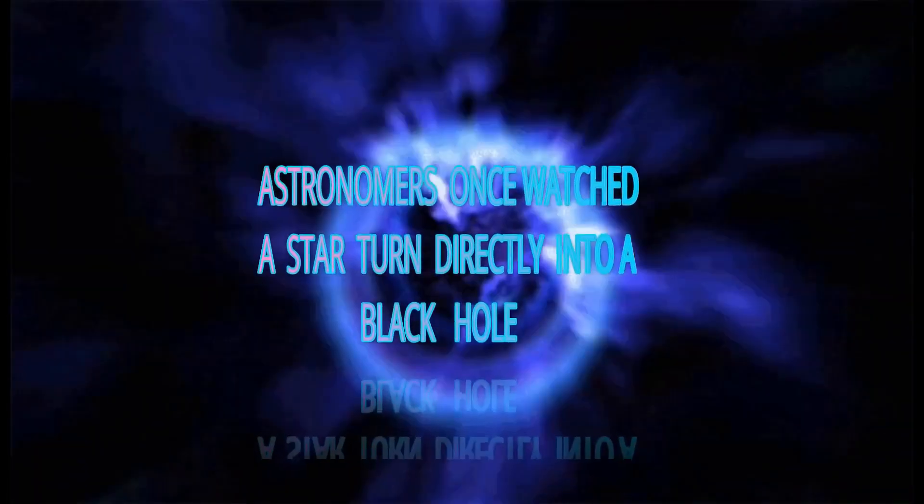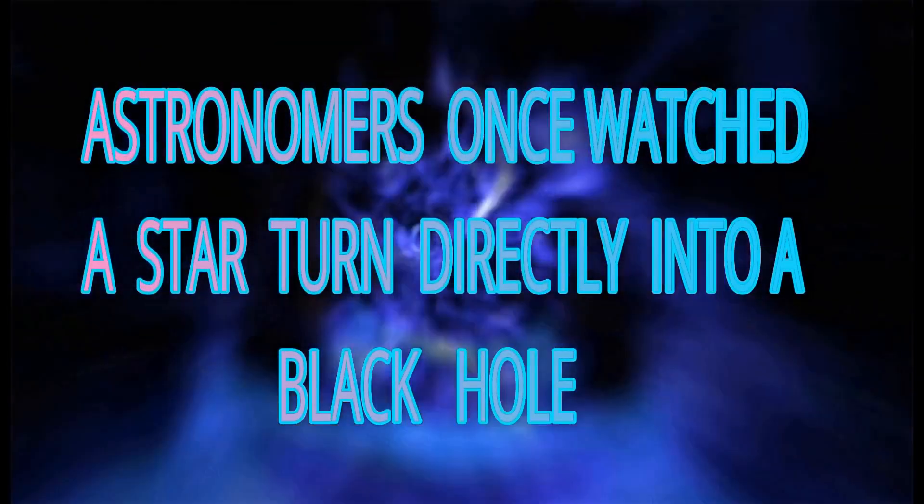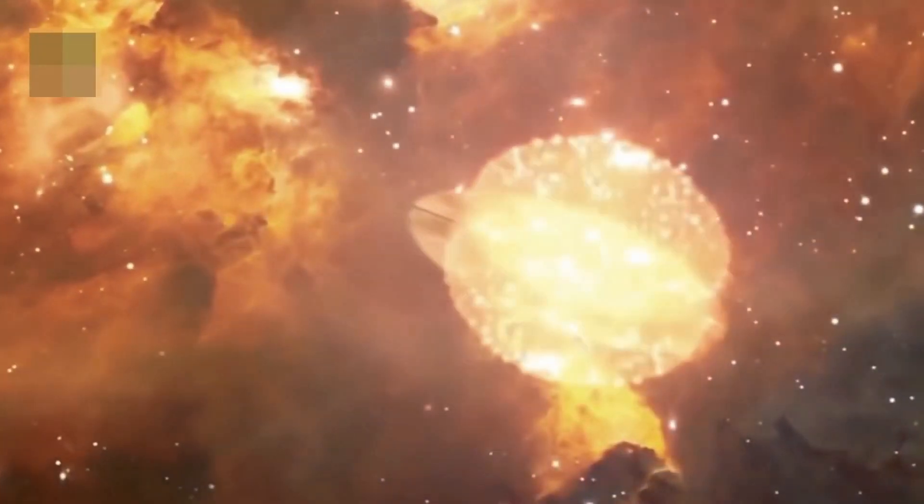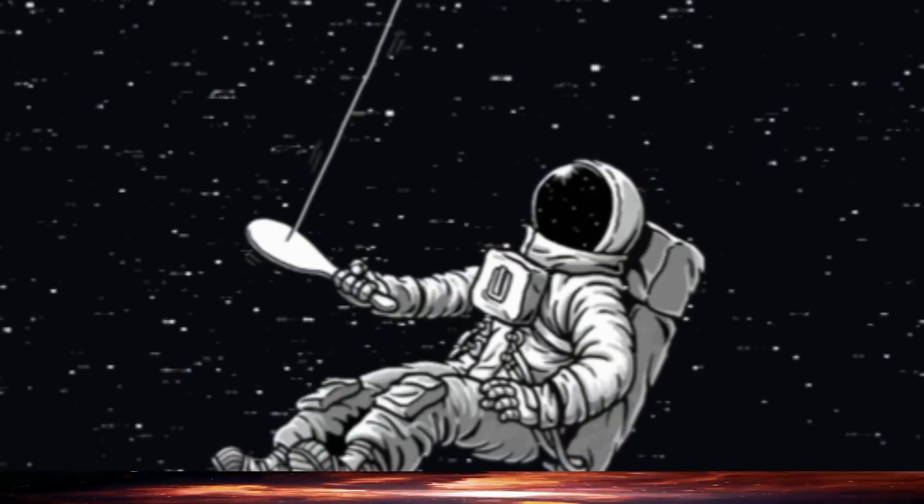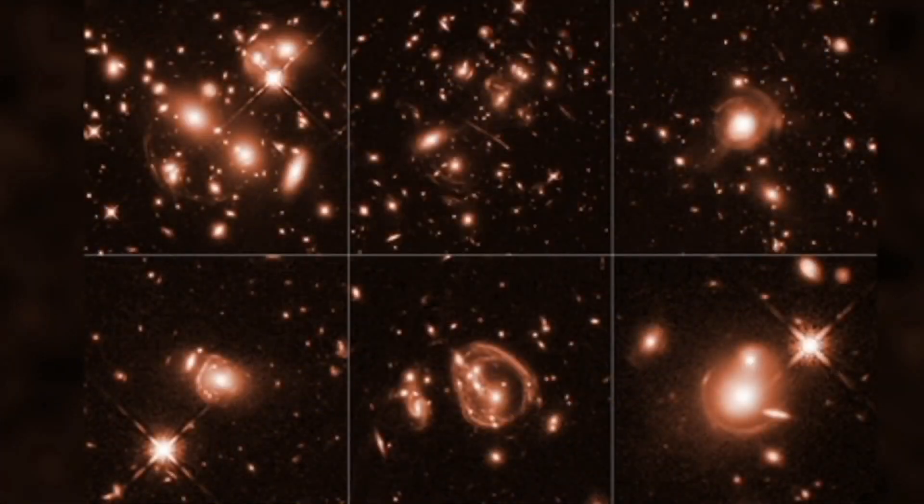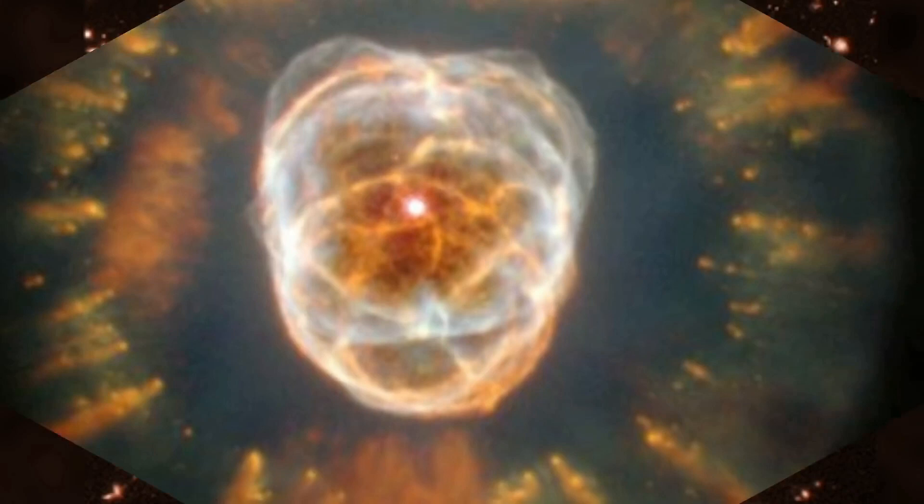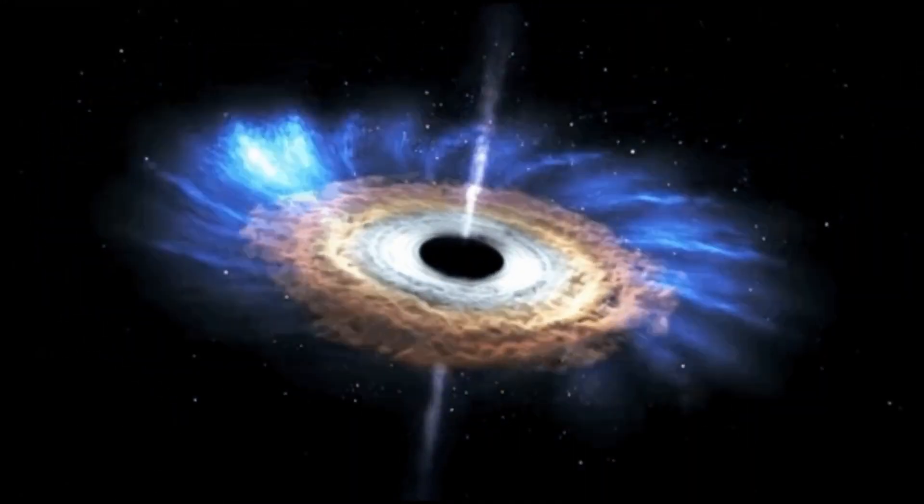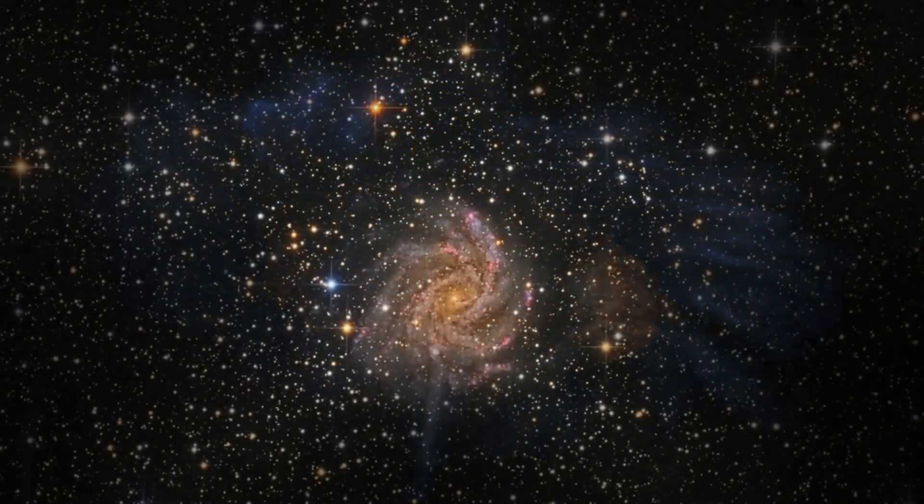Astronomers once watched a star turn directly into a black hole. Most times, stars go out with a bang, a supernova most specifically, but scientists recently observed a star that went out with a whisper, skipping the supernova phase and going straight into a black hole. The discovery not only teaches us more about stars, but it could also uncover the mysteries behind some of the universe's most massive black holes.